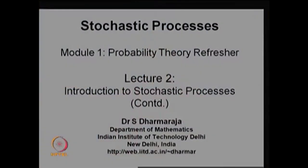This is the continuation of Model 1, Probability Theory Refresher, and this is Lecture 2. In Lecture 1 we covered what is the motivation behind the stochastic process, and then we gave a few examples, followed by an explanation of the minimum things necessary to study the stochastic process.